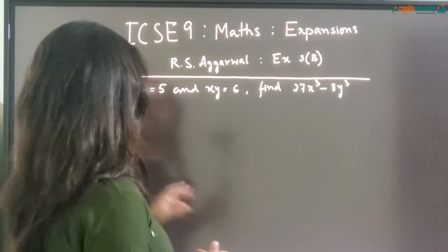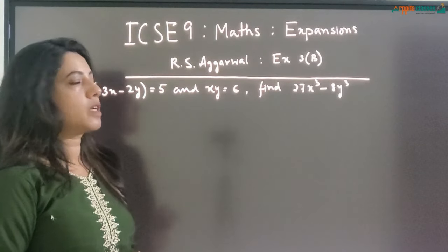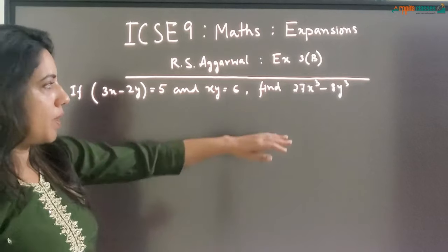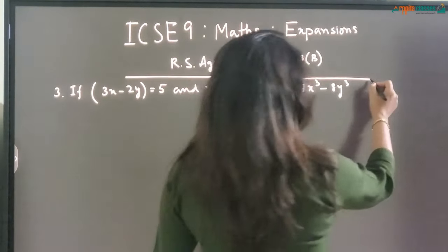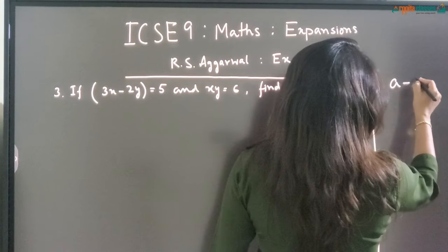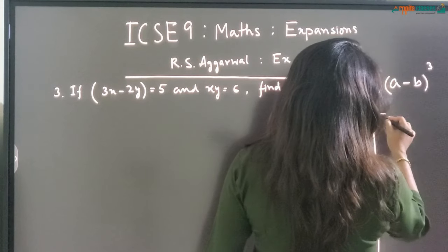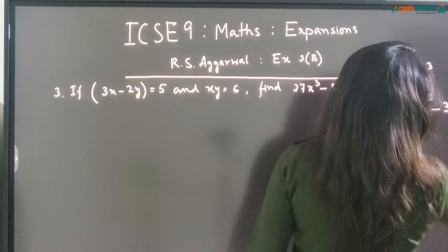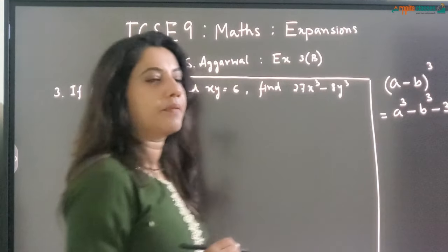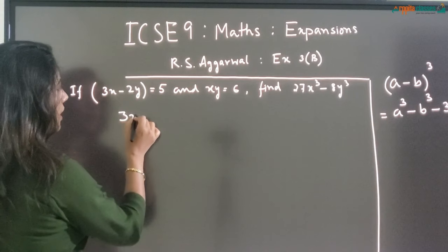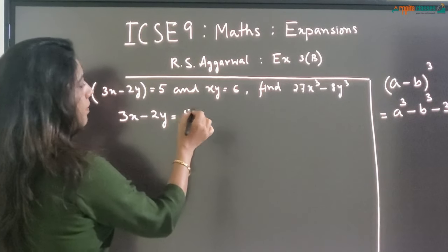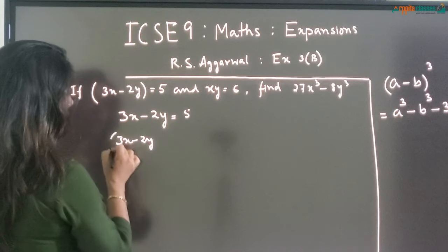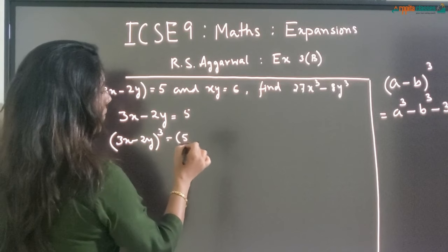In question number 4, we have 3X minus 2Y is 5 and XY is equal to 6. We need to find out the value of 27X cube minus 8Y cube. Since we have to find out A cube minus B cube, I am going to use the formula for A minus B whole cube, specifically the form A cube minus B cube minus 3AB whole into A minus B. So cubing both sides of 3X minus 2Y equals 5, we get 3X minus 2Y whole cube is equal to 5 the whole cube.